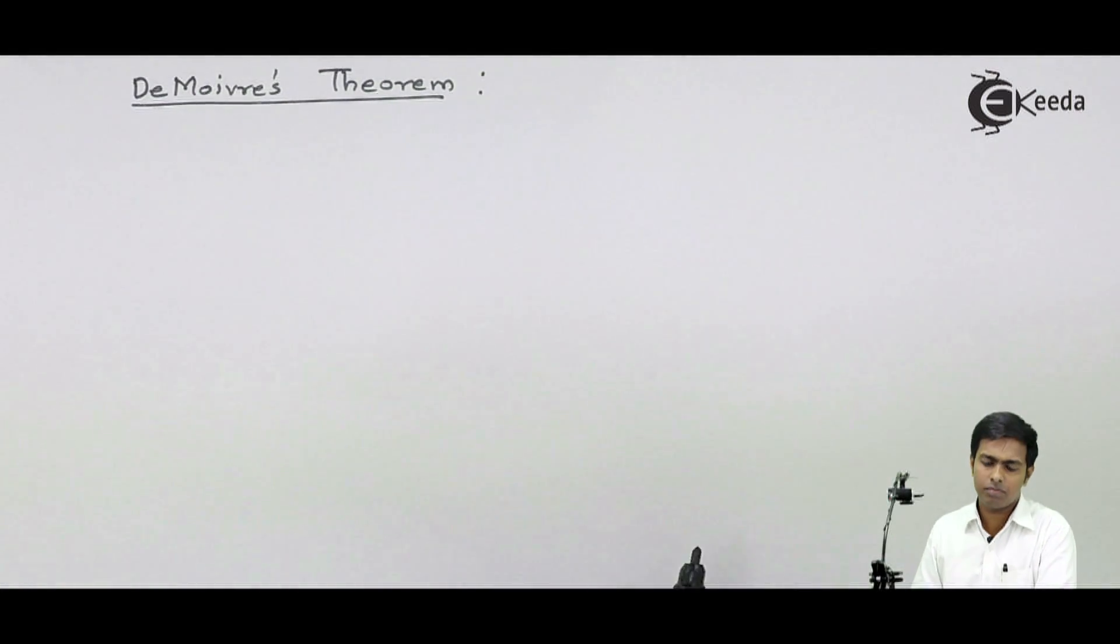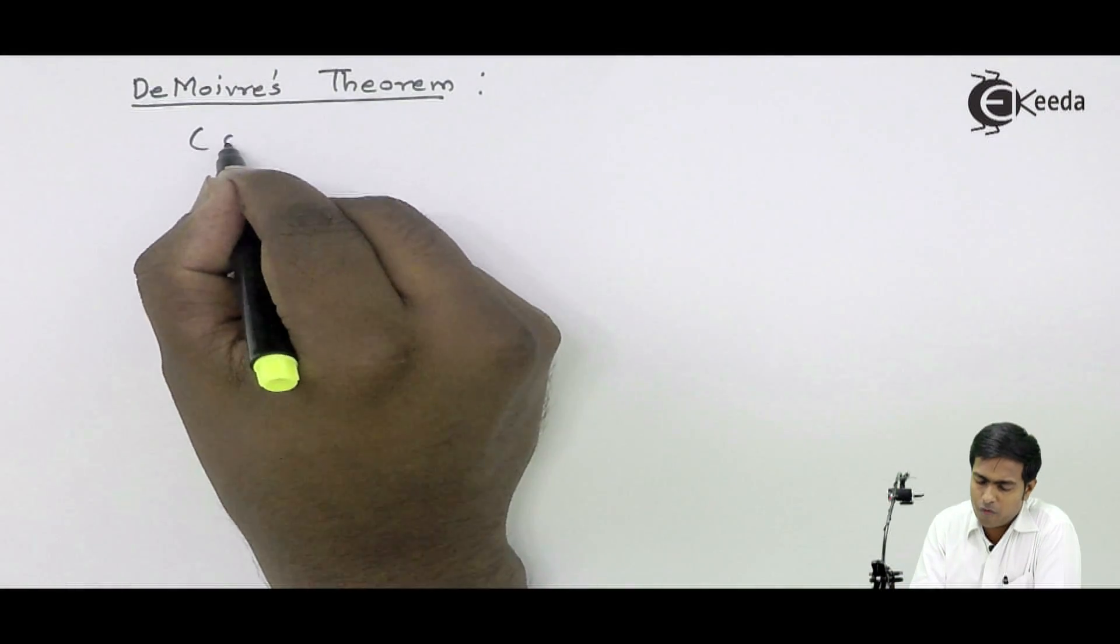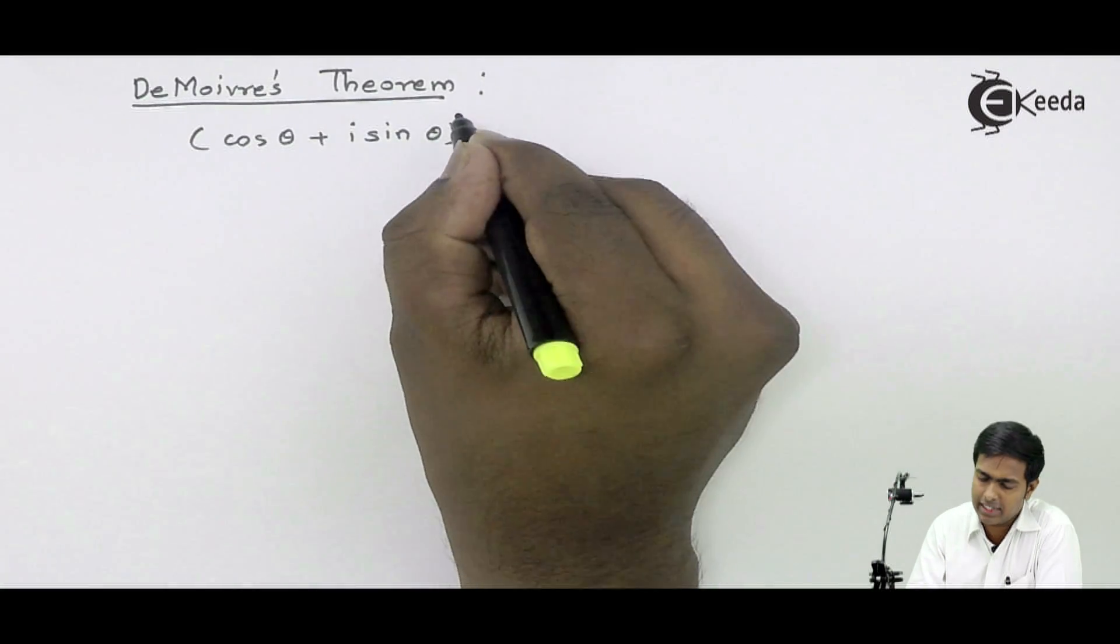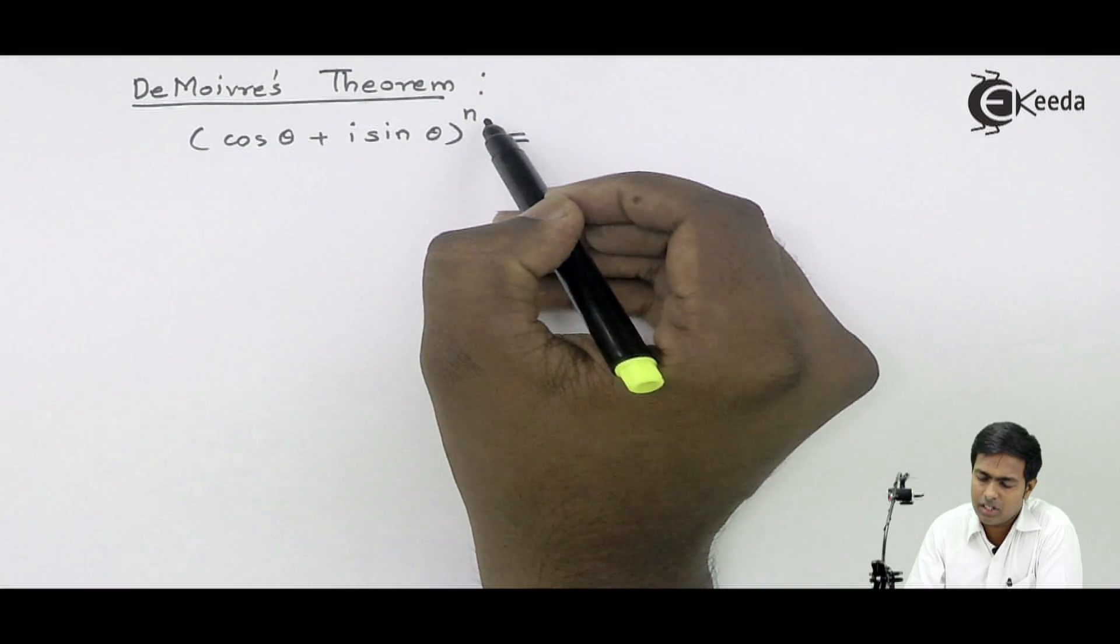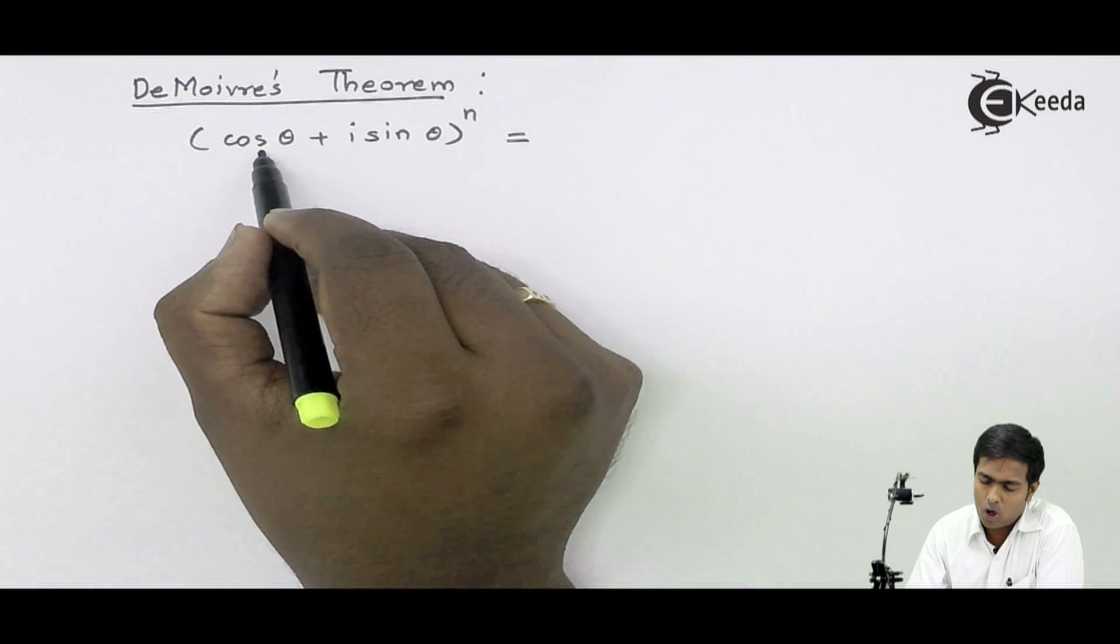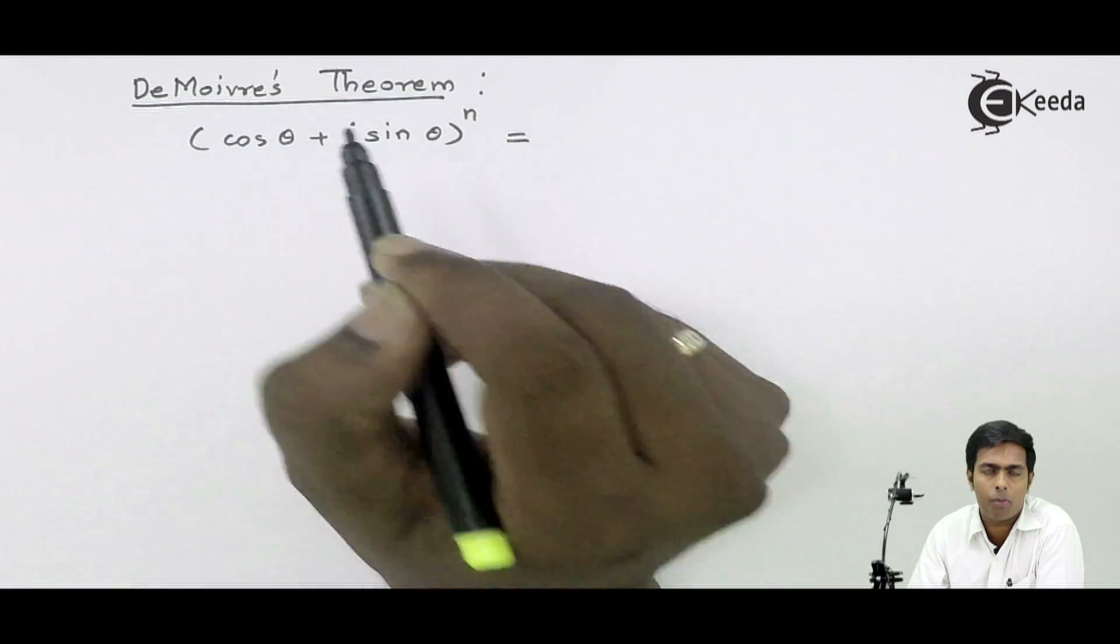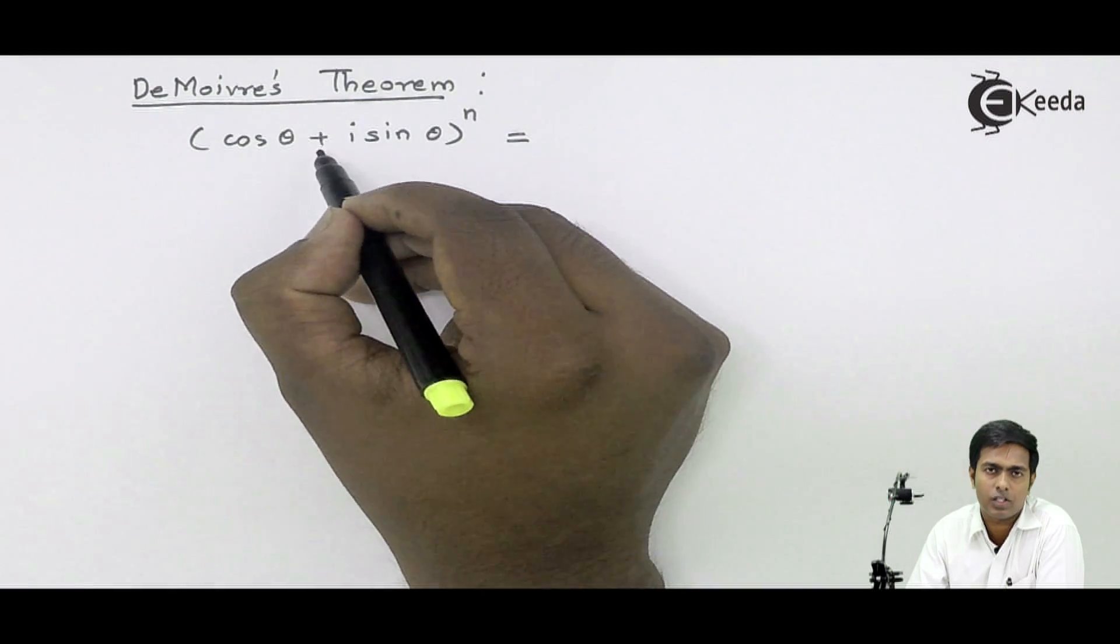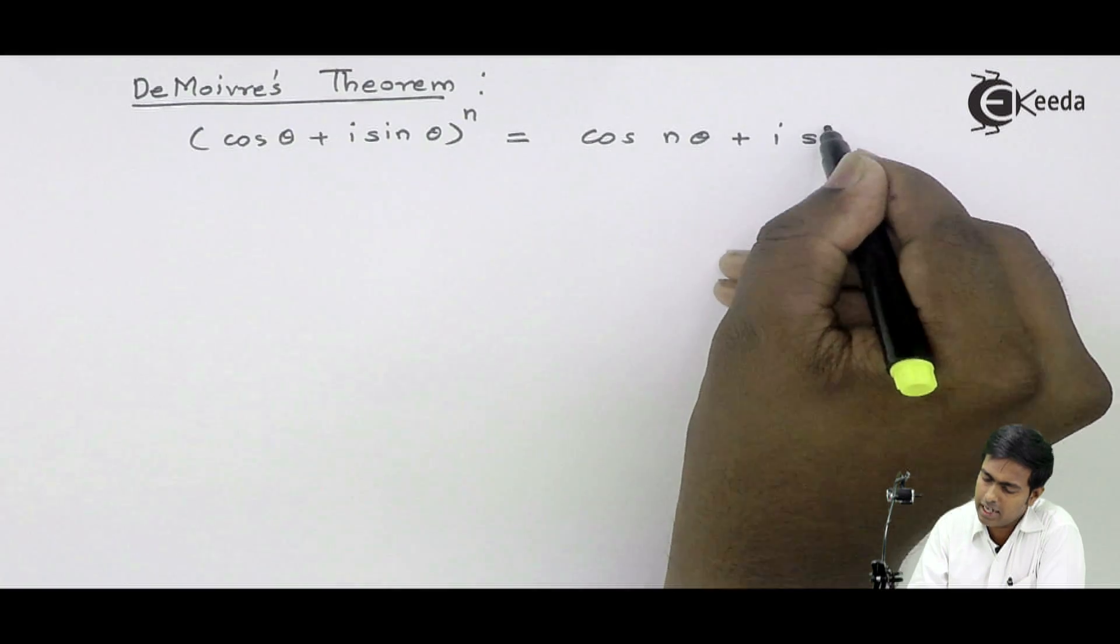What does Abraham De Moivre say? According to him, if you want to find out a power or root of a complex number, let's say it is n (n is any rational number—it can be a whole number or a fraction). So (cos θ + i sin θ) is a complex number and we are trying to find its power. De Moivre says whenever you are finding a power of a complex number, it will become cos(nθ) + i sin(nθ). It means your power will multiply the amplitude of the complex number.